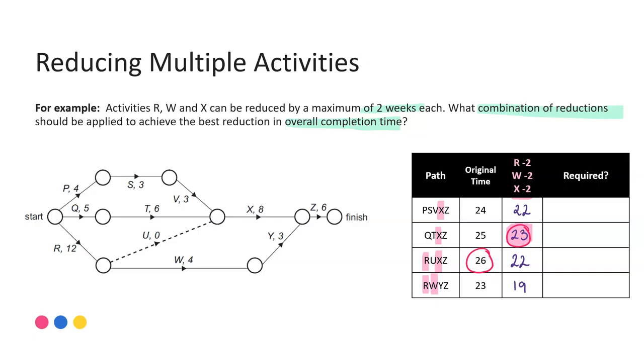So then my next step is to work out what reductions do I actually need to do. The process I tend to look at is firstly I concentrate on the new critical path. What did I do to achieve that time of 23? Well by highlighting in my table that gives me a hint or that helps me track. So I actually reduced X by two weeks. My next step is then to look at the original critical path and look at what reductions might I need to do in order to achieve this new critical time of 23 weeks. So originally it was 26. I need to bring it down in line with the new critical path. So that means I need to save three weeks.